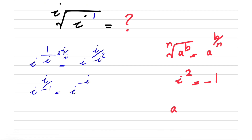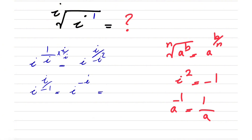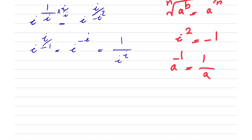So we know when we have a to the power of minus 1, this will be equal to 1 over a. So i to the minus i can be written as 1 over i to the power of i.